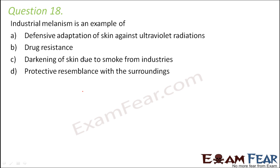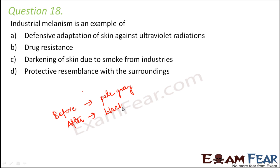Why? Let's take the example of the peppered moth in the UK. Before the industrial revolution, the color of the peppered moth was pale gray, whereas after the industrial revolution, the moths were found to be black. When the moths were darker in color, they camouflaged with the dark backgrounds, and as a result they could protect themselves from their predators. So this darker color helped them to adapt with the surroundings better.